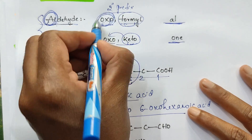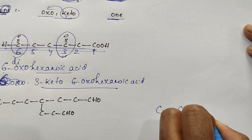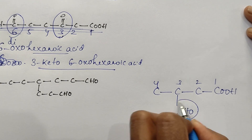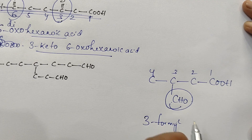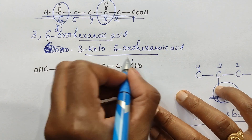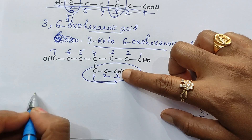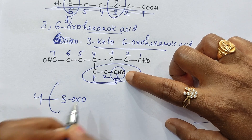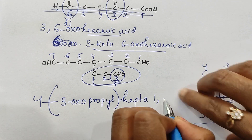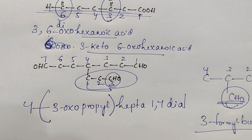For aldehyde, oxo you have to use when it is included in the numbering parent chain. But formyl you have to use when it is present as a side chain. For example, CHO — start numbering 1, 2, 3, 4. And this is a side chain. Then you should say 4-formylbutanoic acid. Here you are not giving numbering to this CHO, so you should not use oxo. Give numbering from here, and this CHO is a side chain. At 3rd position oxo is there because you are giving numbering to that. Total 3 carbons in side chain — propyl, total 7 carbons — heptane, 1st and 7th position aldehyde — so it is dial. 4-(3-oxopropyl)heptane-1,7-dial.